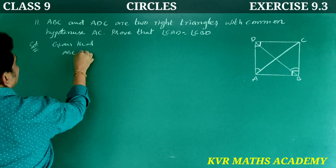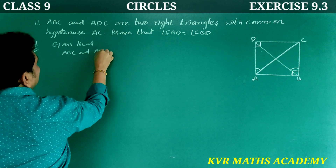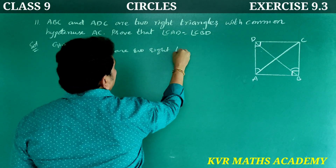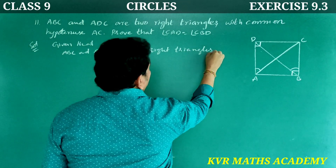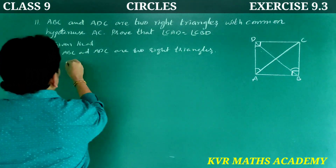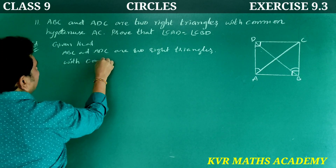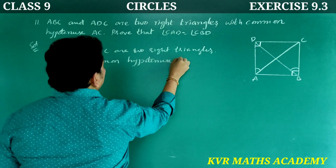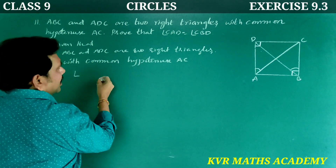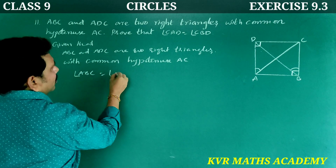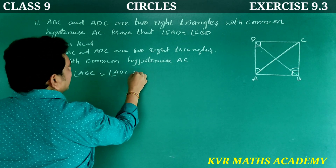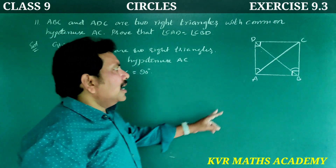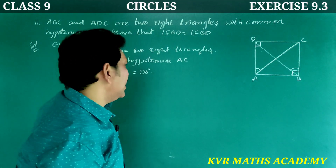Given that ABC and ADC are two right triangles with common hypotenuse AC. Angle ABC is equal to angle ADC, and each is equal to 90 degrees.